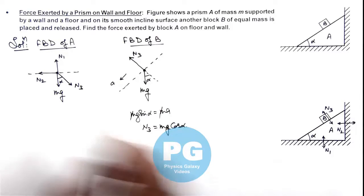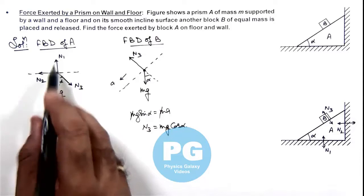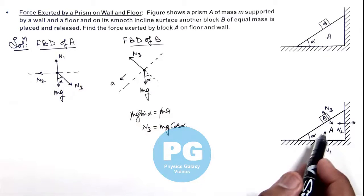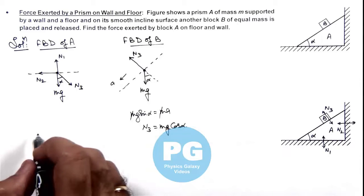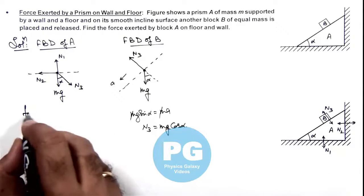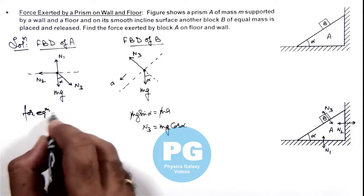Now if we write the equation of motion for block A, here we can write it is in equilibrium because the prism A remains at rest. So we can write for equilibrium of A.